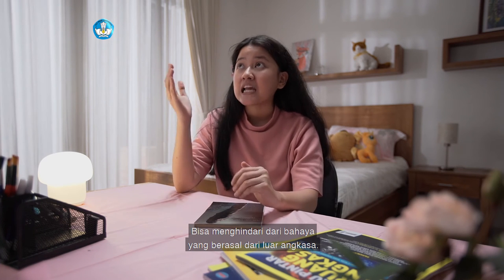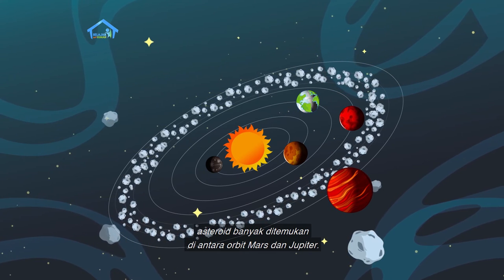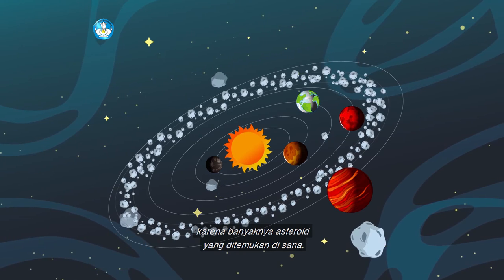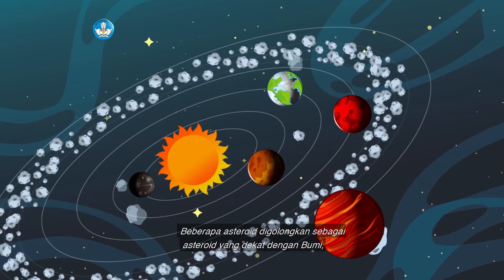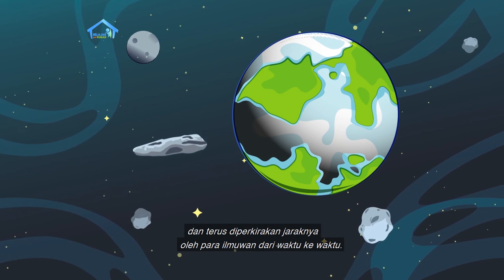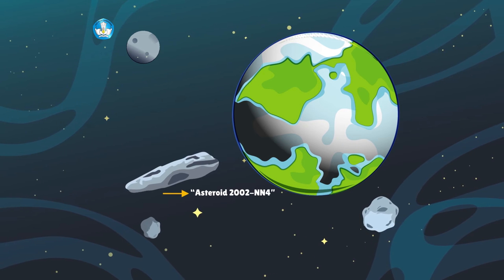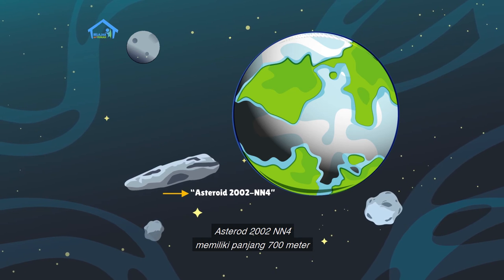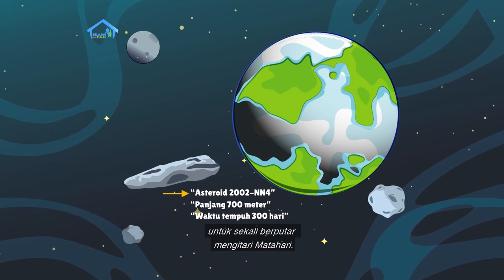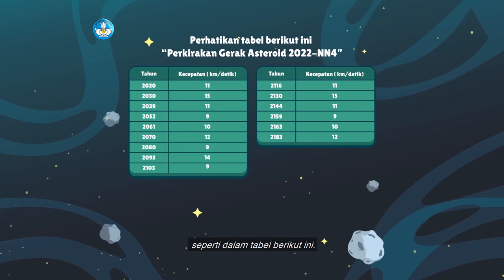Ayo mencoba! Di tata surya kita, asteroid banyak ditemukan di antara orbit Mars dan Jupiter. Lokasi tersebut dinamakan sabuk asteroid karena banyaknya asteroid yang ditemukan di sana. Beberapa asteroid digolongkan sebagai asteroid yang dekat dengan bumi dan terus diperkirakan jaraknya oleh para ilmuwan dari waktu ke waktu. Salah satunya adalah asteroid 2002 NN4, yang memiliki panjang 700 meter dan membutuhkan waktu 300 hari untuk sekali berputar mengitari matahari.